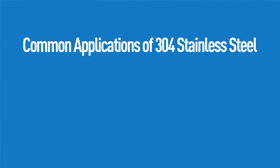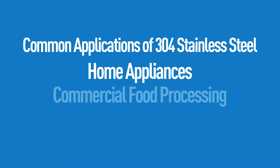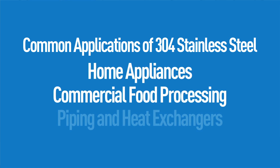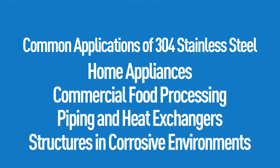304 stainless steel is commonly used for home appliances, in commercial food processing, piping, heat exchangers, and some structures in environments that would corrode standard carbon steel.